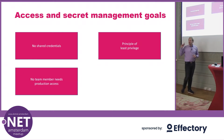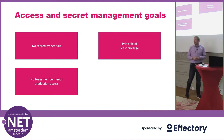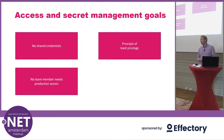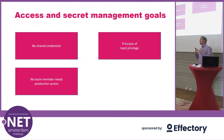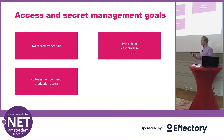Thirdly, no team member should ever have standing production access. In a perfect world, there's only one thing that has access to your production environment: your DevOps pipeline. That pipeline is responsible for putting both your code and your secrets into that runtime environment, and nobody should ever have to be there. Of course, your team should have some means to elevate access in production if the case arises, but there should be no standing access.